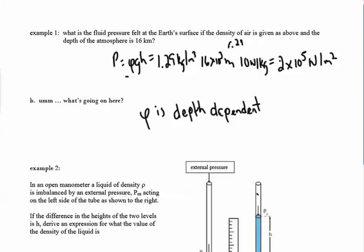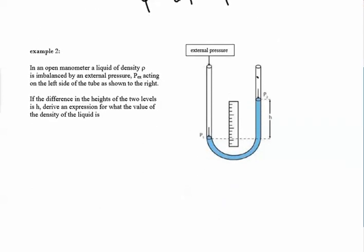The next one is a fairly common type of problem. We have an open manometer, which is just a tube that's shaped like a U, and we have a fluid in here that's not at the same level. And the reason they're not at the same level is because there's some external pressure pushing down on it. In other words, if we took away this external pressure, we would see these two levels the same.